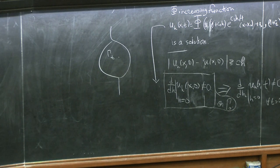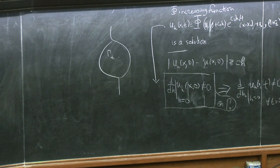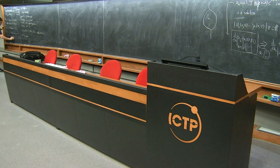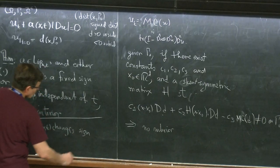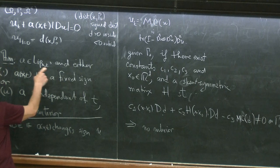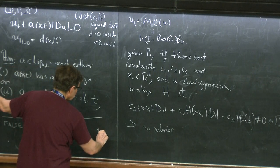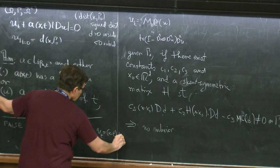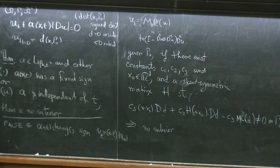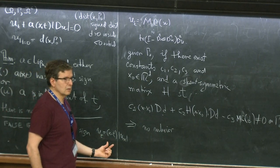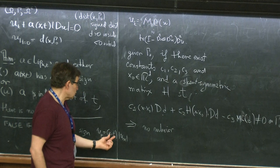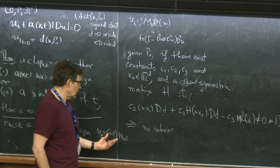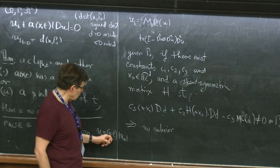Let me give you an example where you have interior. If this changes sign, the result is false. The canonical example that everybody uses is this in 1D — clearly this thing changes sign. And then, if you use a proof based on the control interpretation of the problem, you can show that there is interior. It's u_t equals (x minus t) u_x.